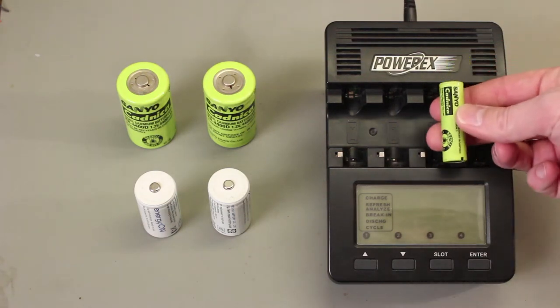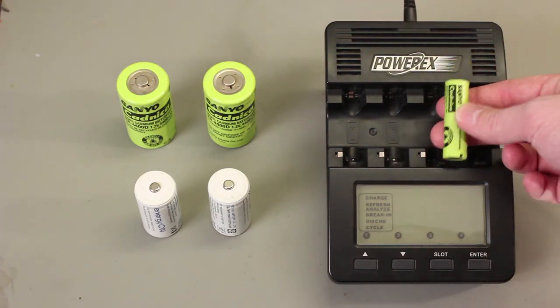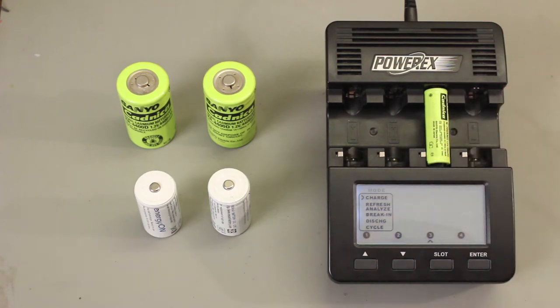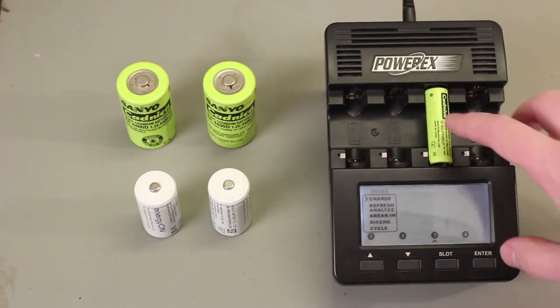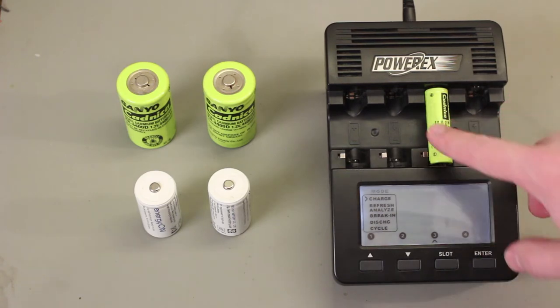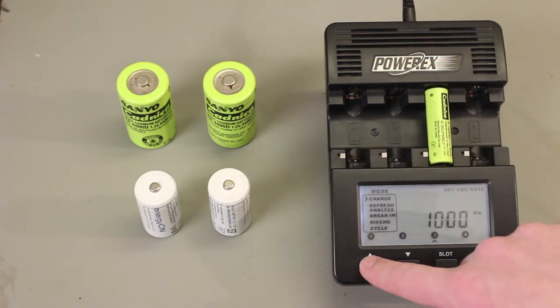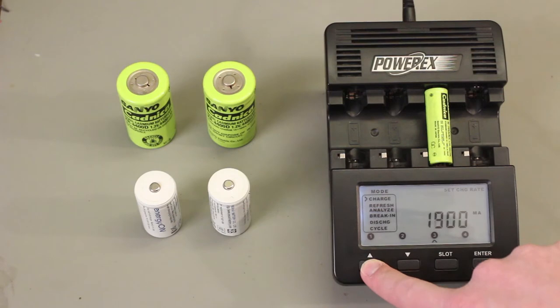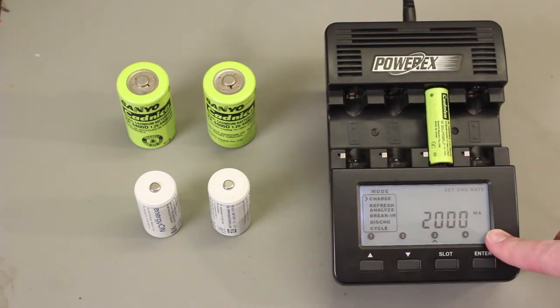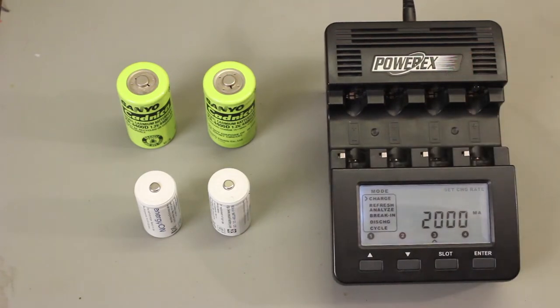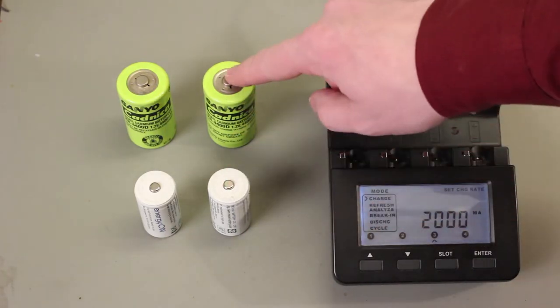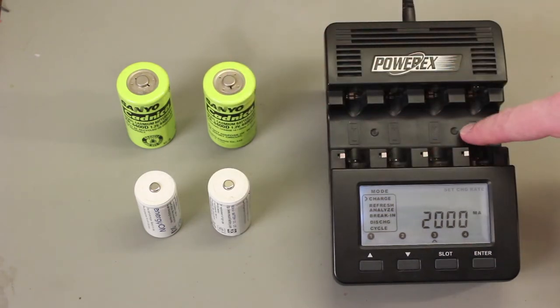By design, it only accepts AA and AAA size cells. But you'll notice that the circuitry can handle much higher charge and discharge rates than you would ever use for AA and AAA cells. For instance, if I go to charge, I can run this all the way up to 2,000 milliamps or 2 amps. With currents like that, I could easily charge C and D cells if they would fit in this case.